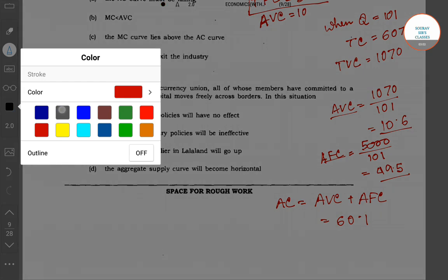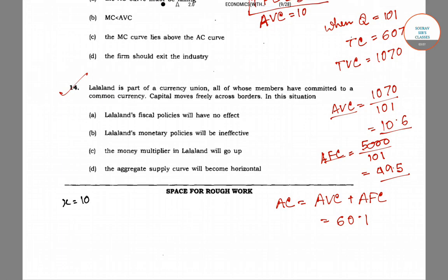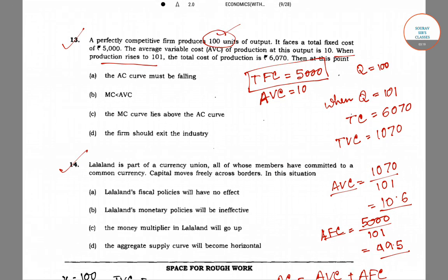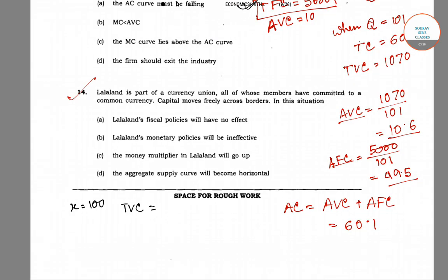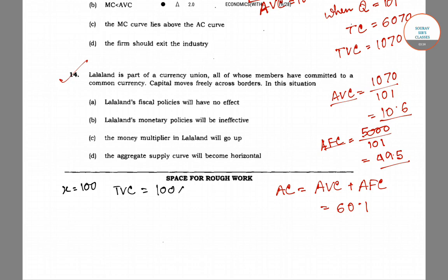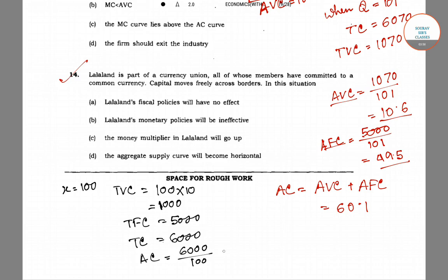Now, when quantity was 100, the TFC was 5000 and AVC was 10 per unit, so TVC was 100 into 10, which is 1000. Therefore, total cost of production was TVC plus TFC: 1000 plus 5000 equals 6000. The average cost of production was 6000 divided by 100, which was 60.